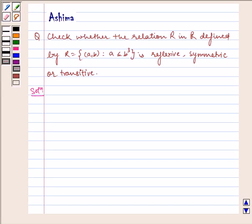Hello and welcome to the session. Let us discuss the following problem today. Check whether the relation R in R defined by R equals the set of ordered pairs (a,b) where a is less than or equal to b cubed is reflexive, symmetric, or transitive. Now let us write the solution.